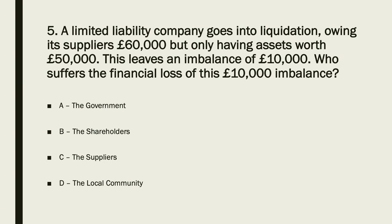The answer to question five is C — the suppliers. The suppliers will be faced with the financial loss here. Shareholders might be confused with limited liability, but remember they have limited liability, so it's clearly not going to be them. It has to be the other business, which in this case is the suppliers. So five is C.